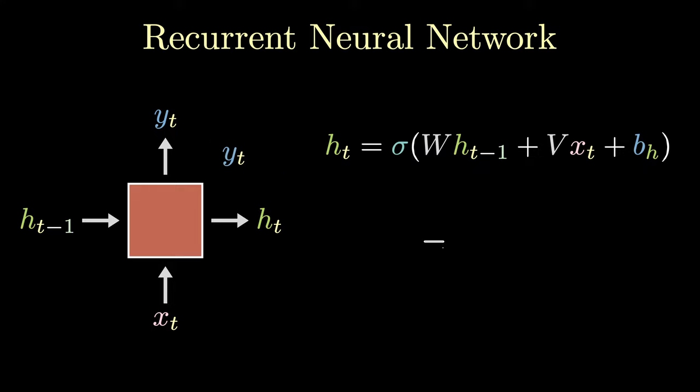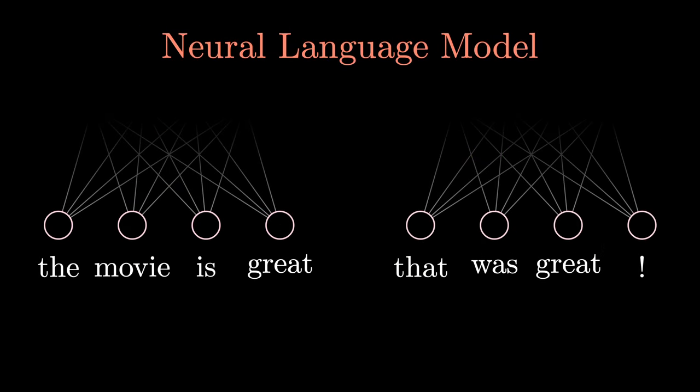We can then compute the output yt as a transformation on ht plus some bias term, passed through an activation function. The key thing to notice is that the matrices used to compute all these transformations are the same across each and every cell. Remember the example when the word 'great' was used in different places, which caused the input representations to be more different than wanted? This uniformity addresses that issue. Now if I input 'great' into an RNN cell, this same transformation is applied no matter what position it's in.